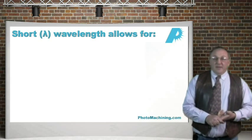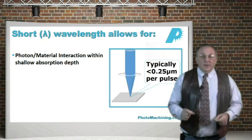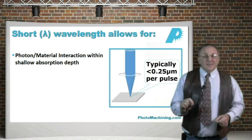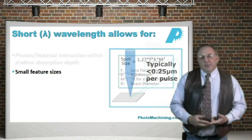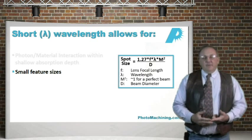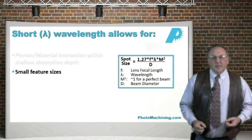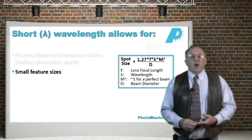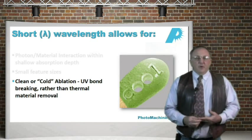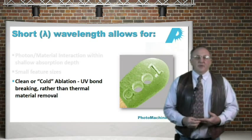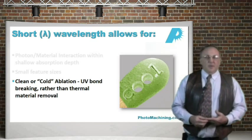The short wavelength allows for a photon-material interaction within a very small absorption depth, so photons only travel a short distance into the material before they eject material. Also, because we're using UV photons, physics tells us we can get a smaller spot size with otherwise identical optical setups, so we can achieve the smallest feature sizes with UV light. Finally, UV photons have enough photon energy in many cases to break chemical bonds rather than burn them.